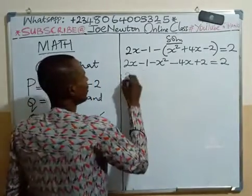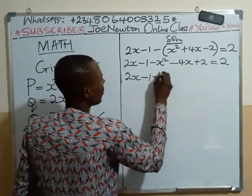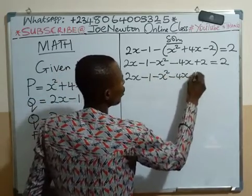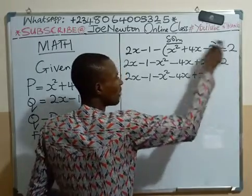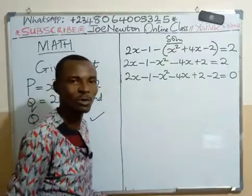So equated to zero, we have 2x minus 1 minus x squared minus 4x plus 2 minus 2, so that all will be equal to zero. A typical quadratic equation.